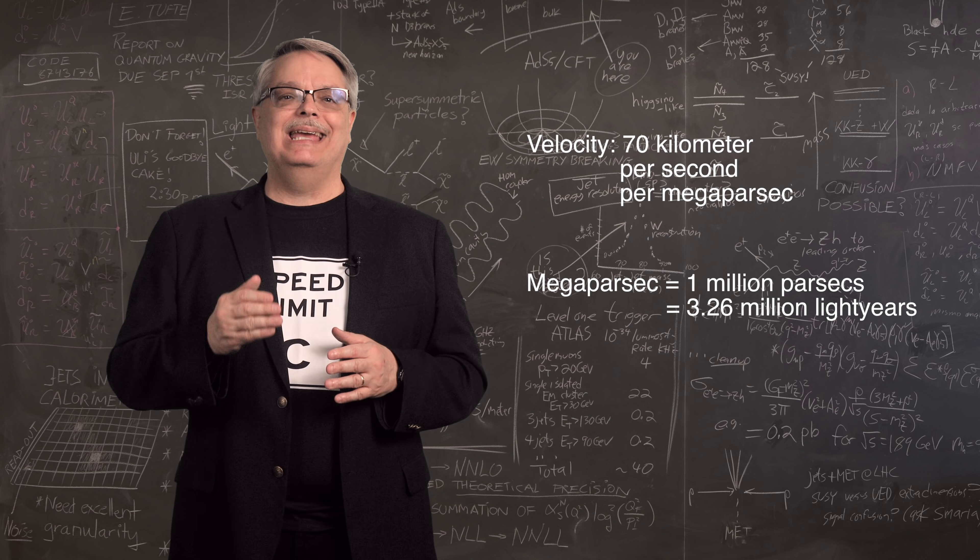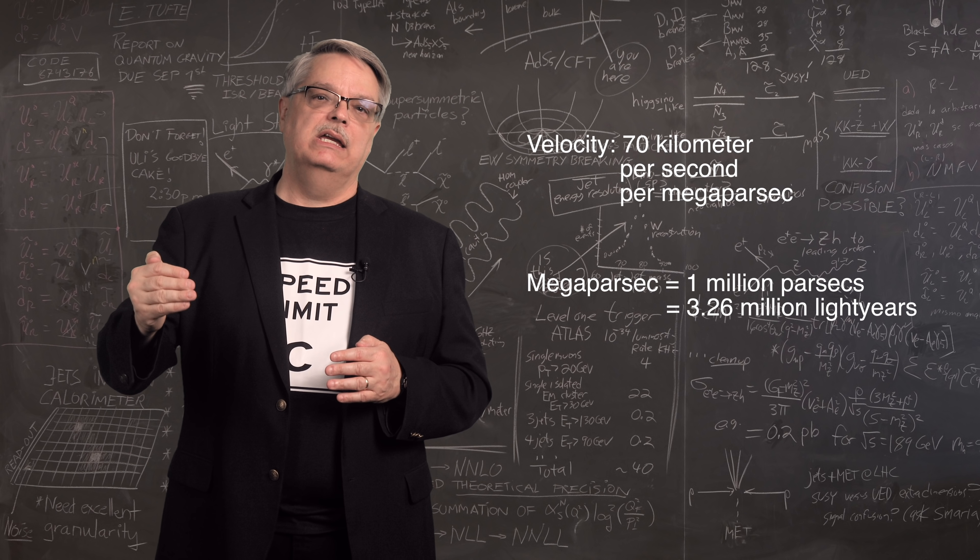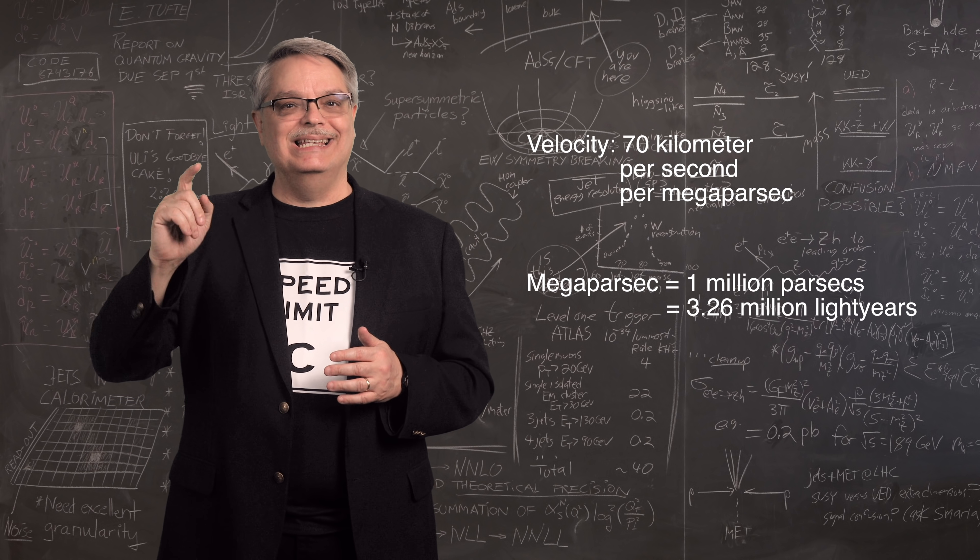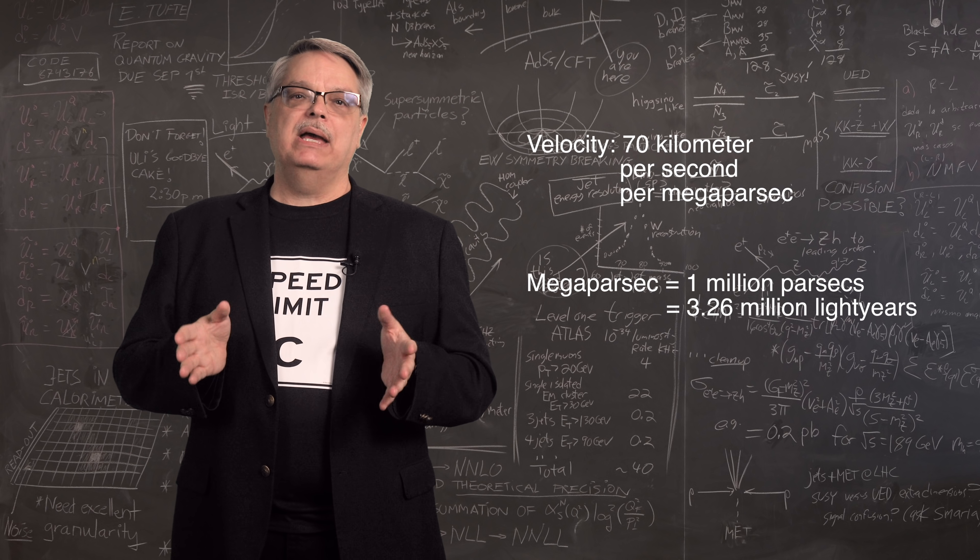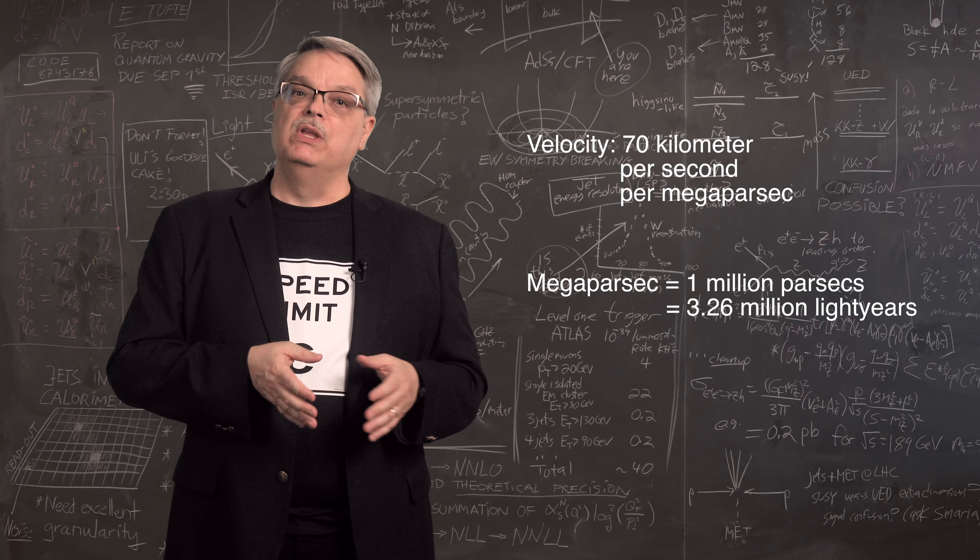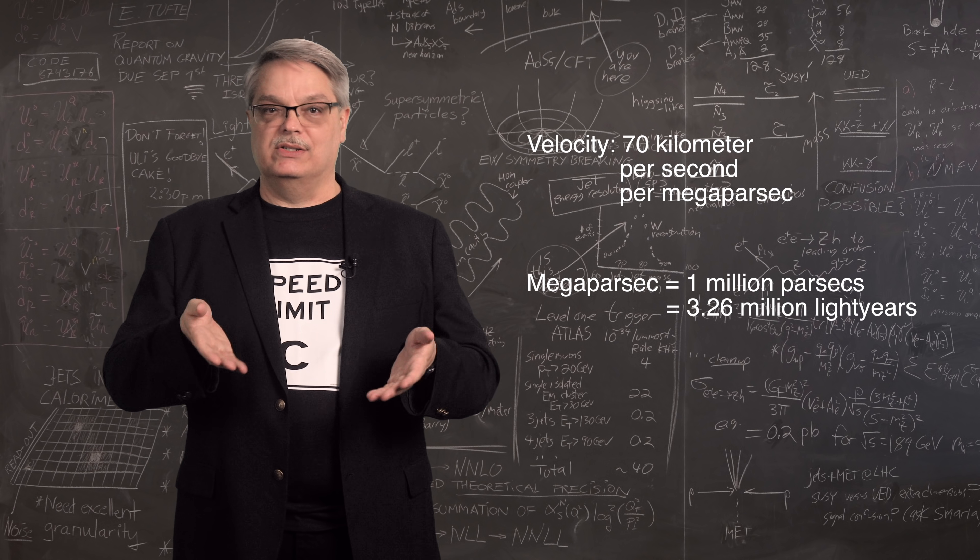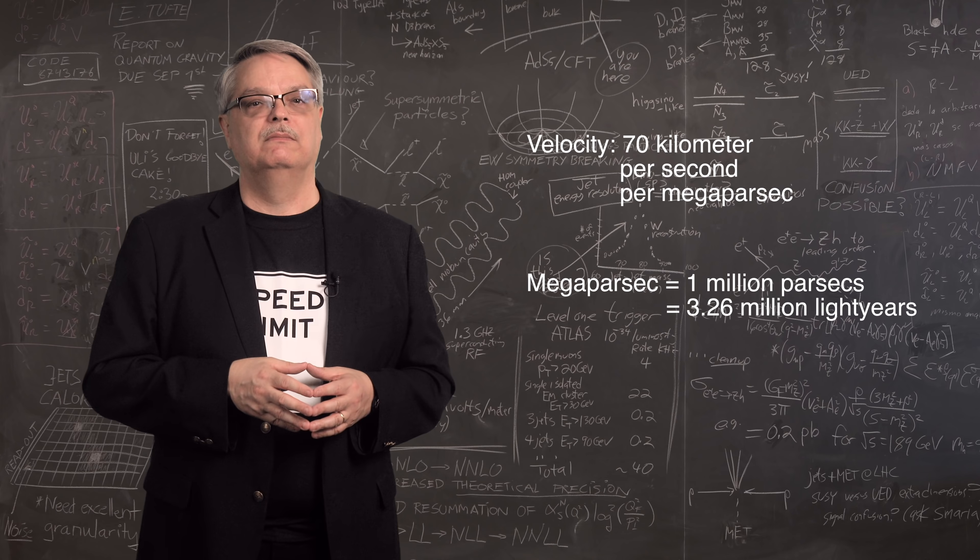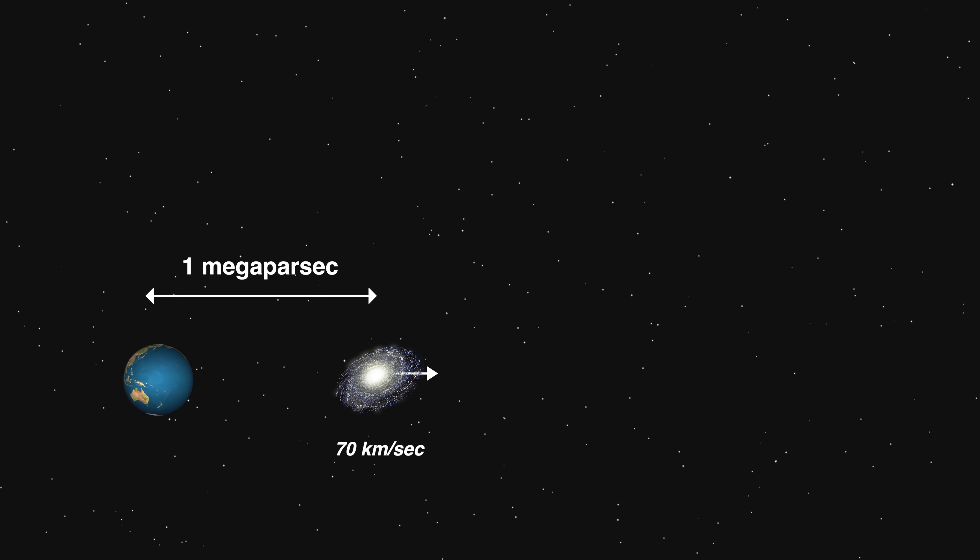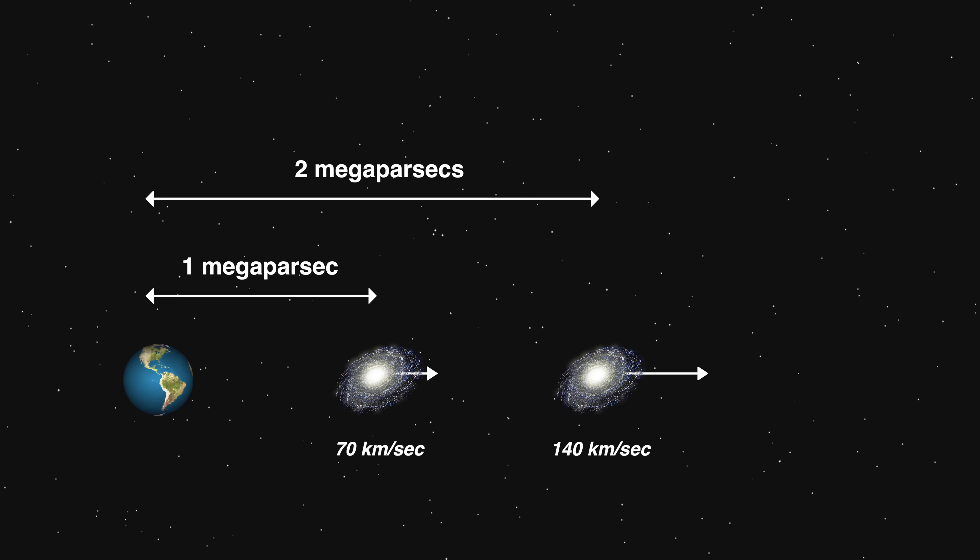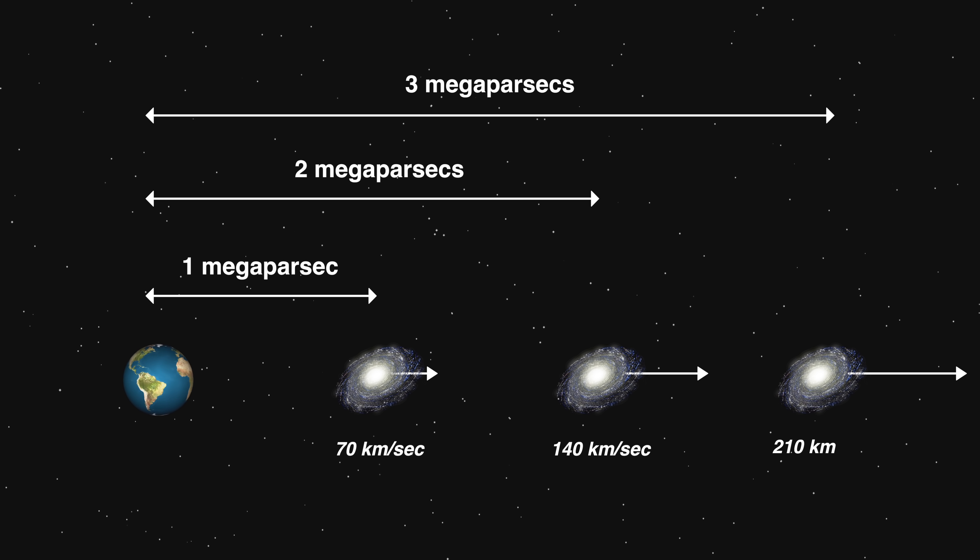Using modern numbers, a galaxy a megaparsec away is moving away from us at 70 kilometers per second. A megaparsec is a million parsecs, which is 3.26 million light years, by the way, but astronomers use megaparsecs, so I will too. If a galaxy a megaparsec away is moving away at 70 kilometers per second, a galaxy 2 megaparsecs away is moving away at 140 kilometers per second. 3 megaparsecs means 210 kilometers per second, and so on.